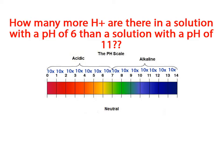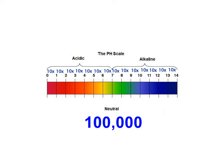Hopefully you figured out that a pH of 6 has 100,000 times more hydrogen ions in solution than a pH of 11.